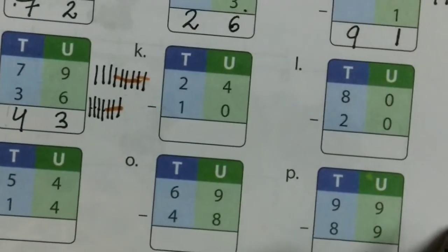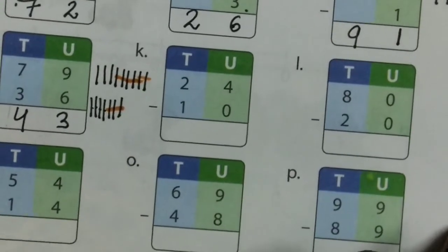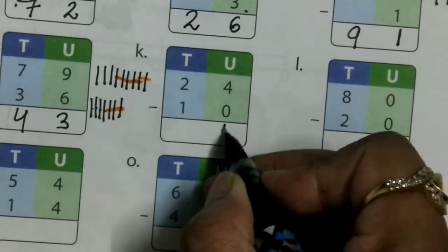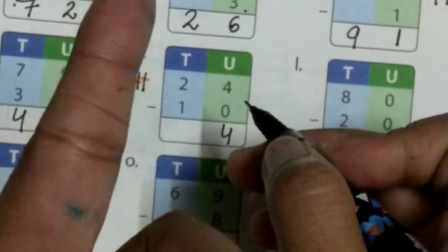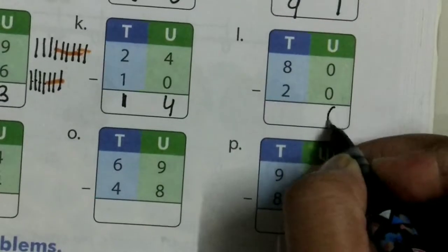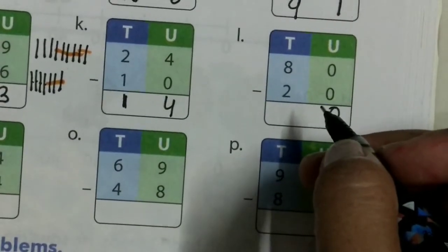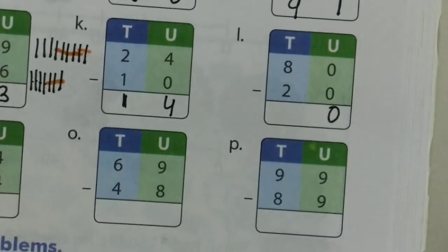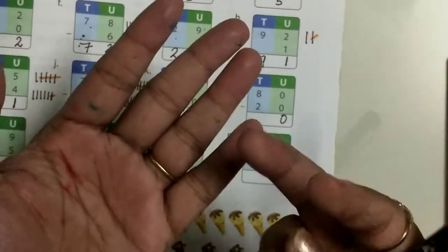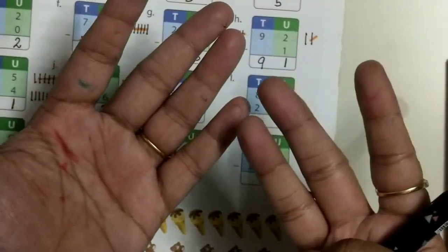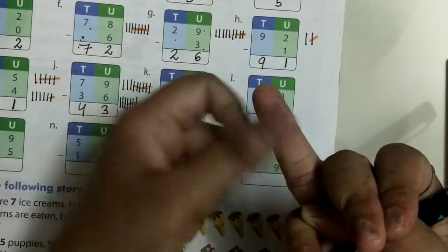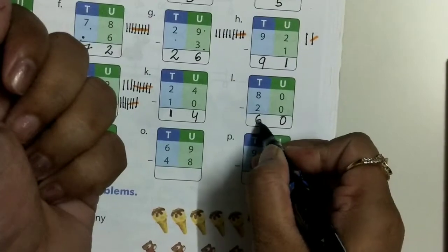4 minus 0 — when we remove 0 from anything, it will be 4. 2 minus 1 equals 1. 0 minus 0 equals 0. And 8 minus 2 — you can use your fingers: 5 plus 3 is 8, remove 2, and 5 plus 1 is 6. So it will be 6.